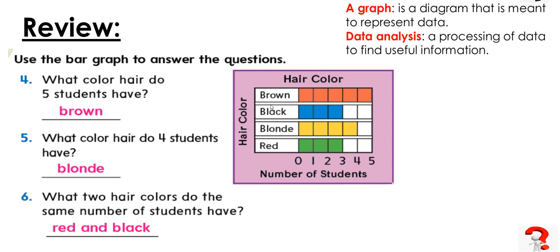And the numbers down here show the number of students that were surveyed. So five students have brown hair. What color hair do four students have? So we need to find who has four, which is this one right here: one, two, three, four. So blonde has four votes.